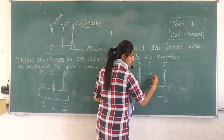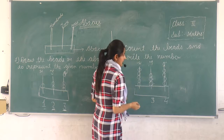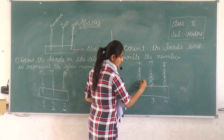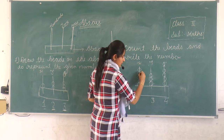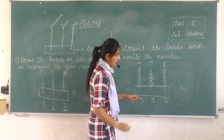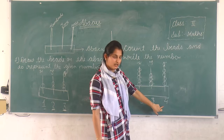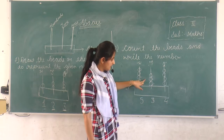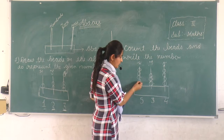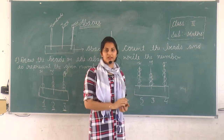And in the hundreds spike, how many beads are here? One, two, three, four, five. Then you write here: five. Count the beads — four beads are here — then write here. How many beads here? Three. Then you write here three. And count here: one, two, three, four, five beads. Then you write here five.